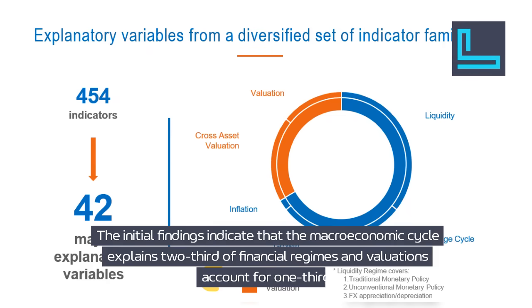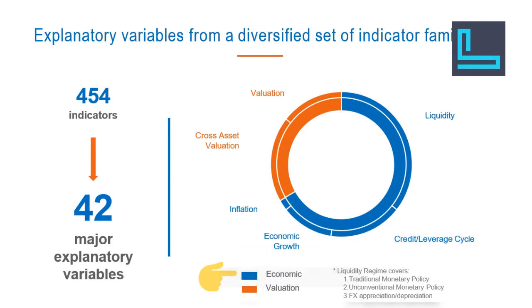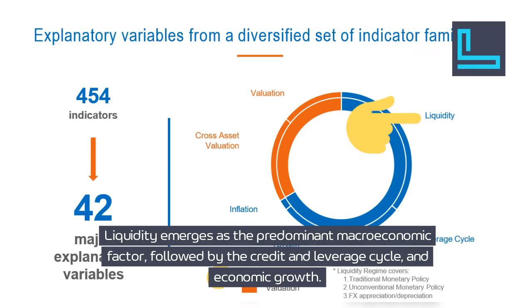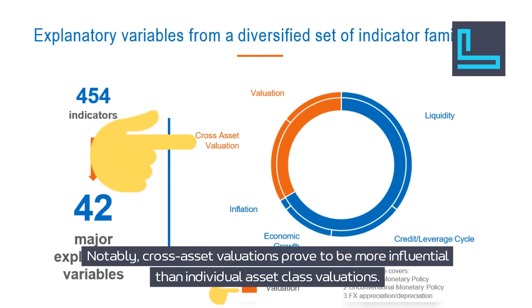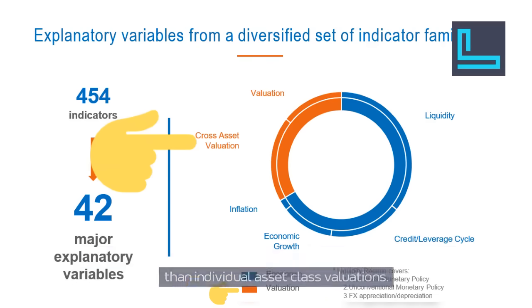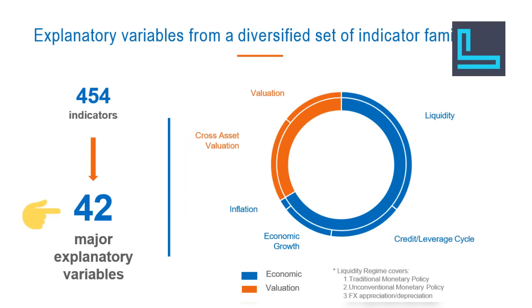The initial findings indicate that the macroeconomic cycle explains two-thirds of financial regimes, and valuations account for one-third. Liquidity emerges as the predominant macroeconomic factor, followed by the credit and leverage cycle and economic growth. Notably, cross-asset valuations prove to be more influential than individual asset class valuations. From the initial pool of 454 indicators, we successfully eliminate 412 variables, as the parsimonious trees retain 42 variables to elucidate the relative behavior of 17 asset classes.